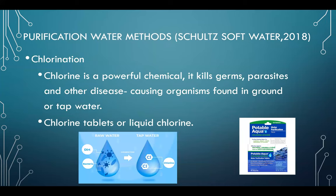Lastly, we have chlorination. Chlorine is a powerful chemical used to kill germs and parasites. We're most probably used to chlorine in the form of bleach, but in another form it can be used to clean water in tablet or liquid form. You can buy this at the grocery store or home improvement stores like Lowe's, add it to the water, and it will kill germs, parasites, and any other disease-causing organisms found in ground or tap water.